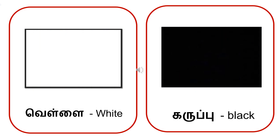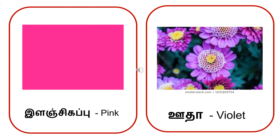Vellai. Vellai is white. Ka-ru. I-p-pu. Karupu is black. E-la-in. Cha-i-ha-ip-pu. Ilanchihap-pu is pink. U-da. U-da is violet.